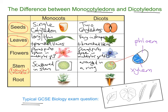Finally, let's look at the root. The roots are fibrous in monocots — there's a dense network of fibrous elements to the roots. Whereas in dicots, we have what's called a tap root, which is a downwards-growing root from which other things can stem. So there we have five key areas in which monocotyledons and dicotyledons differ: seeds, leaves, flowers, stem, and root.